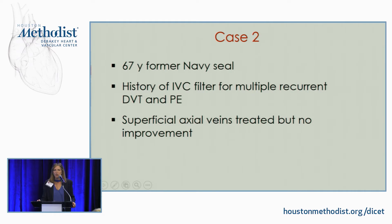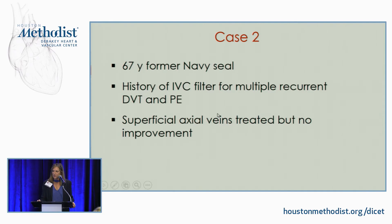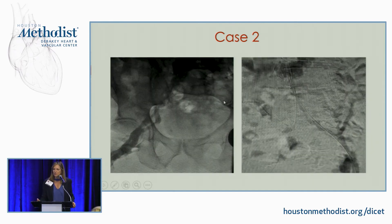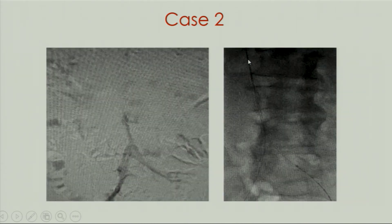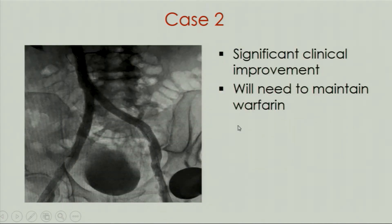Another case: a former Navy SEAL with an IVC filter and multiple recurrent DVTs and PEs. The problem with these patients is they get recurrent stenosis — outflow blockage leads to more DVTs. His initial venogram showed minimal contrast flow; on the left side there was really no flow, completely blocked. After we ballooned it and got wires through the filter, the completion result showed good flow. He was better.